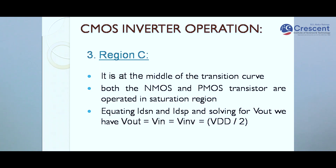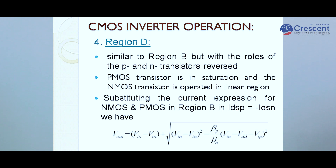Region C is the middle part of the curve — the transition region. Here, both NMOS and PMOS transistors operate in the saturated region. By equating I_DSN and I_DSP and solving for VOUT, we find that VIN equals VDD divided by 2, which is the inverter threshold voltage.